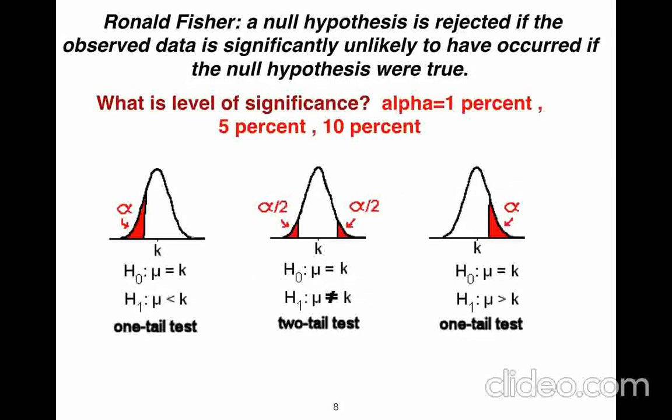A null hypothesis is rejected if the observed data is significantly unlikely to have occurred if the null hypothesis were true.